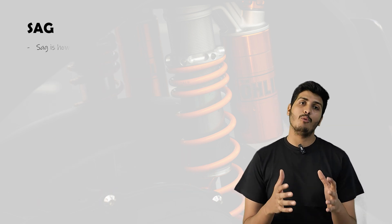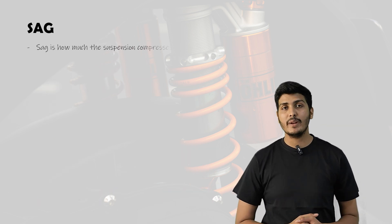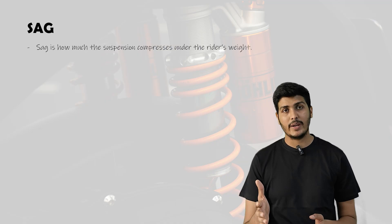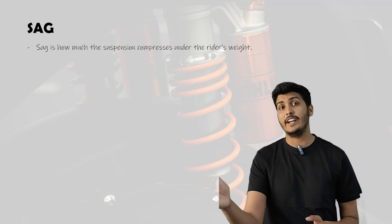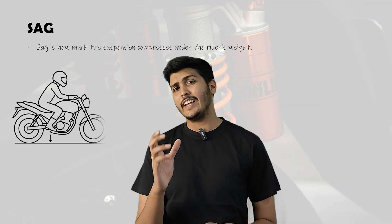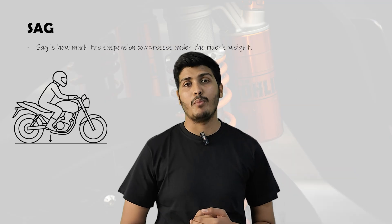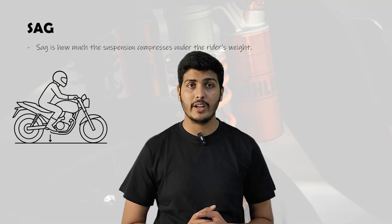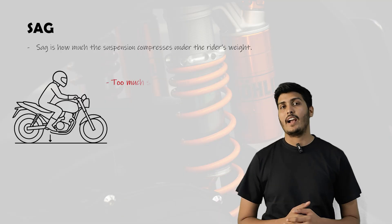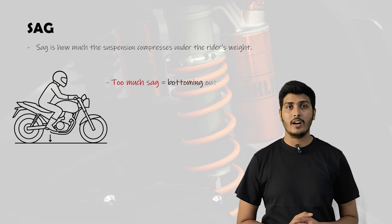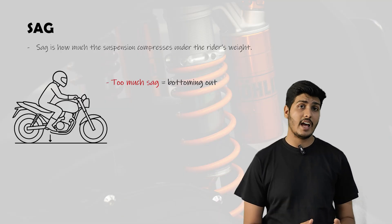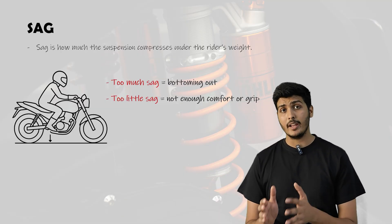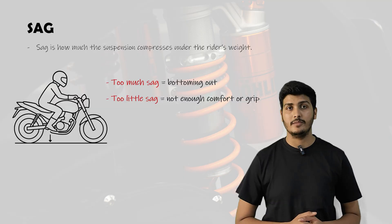The next term is sag — how much the suspension compresses due to the rider's weight even before hitting a bump. Setting the correct sag is important for making the suspension work properly. Too much sag can lead to bottoming out, and too little sag will reduce grip and comfort.